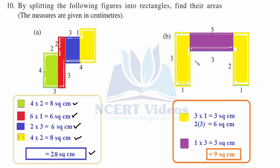For the second figure, two vertical lines were drawn to give two symmetrical parts. First portion: 3 into 1 is 3 square centimeter; since both sides are equal, multiply by 2 to get 6 square centimeter for the yellow portion. For the middle portion: 3 into 1 is 3 square centimeter. Adding 6 plus 3 gives 9 square centimeter for the second figure.